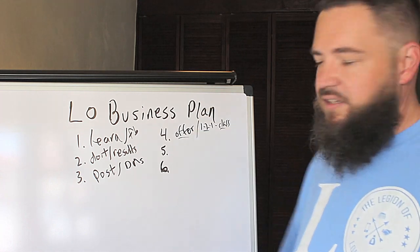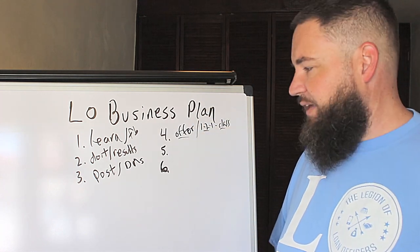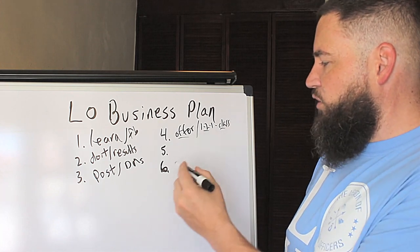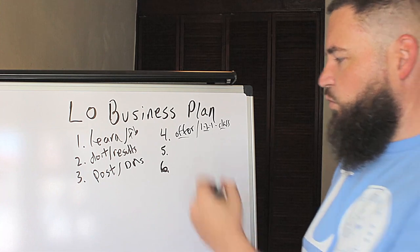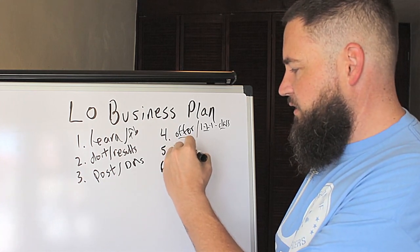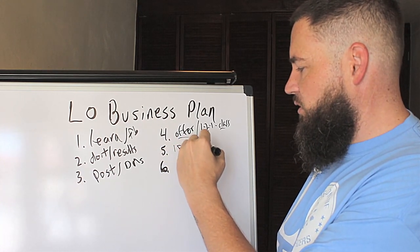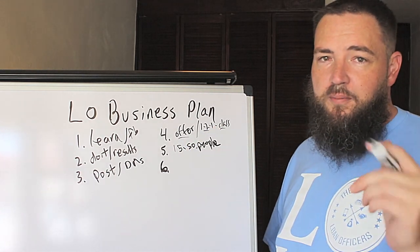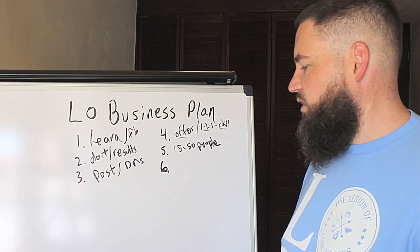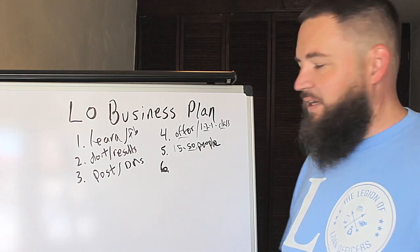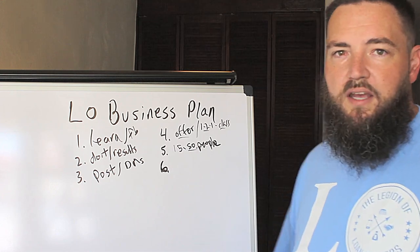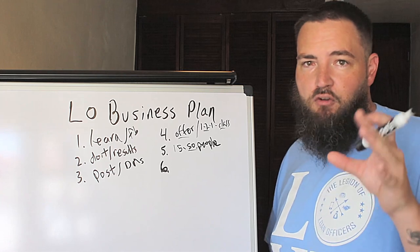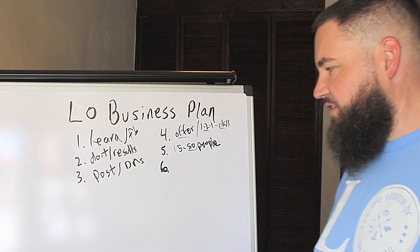You can host a class and say, 'Let me know if you'd want to come.' Right now with the Legion, we average anywhere between 15 and 50 realtors coming to our classes. Imagine getting face-to-face — you're at the front of a room full of realtors, 50 realtors at a time. There's no way you can not grow your business getting in front of 50 agents at the same time.